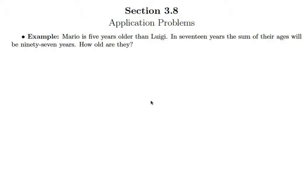This is kind of a tough situation in that they give us information about Mario's age and Luigi's age now, and then they give us information about how they compare to each other in 17 years. So they give us two very distinct sets of information.